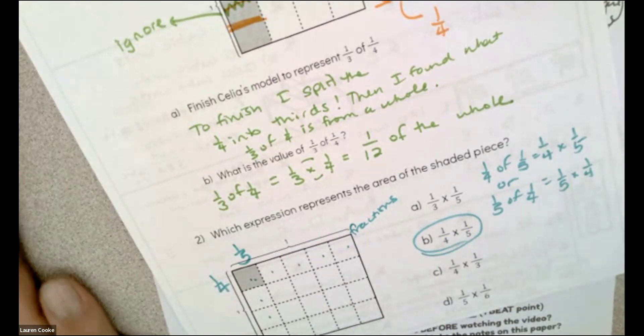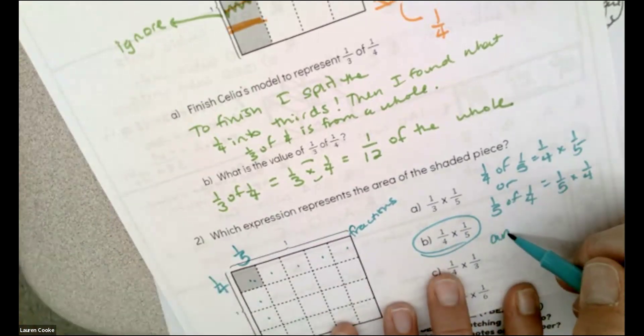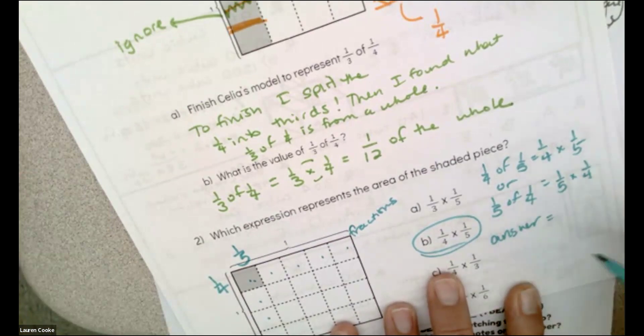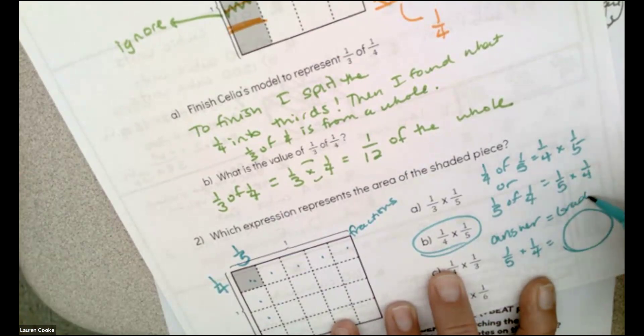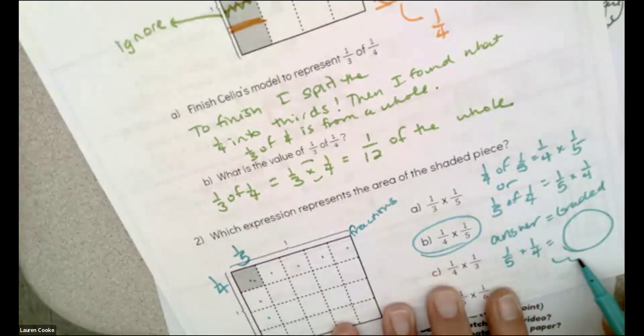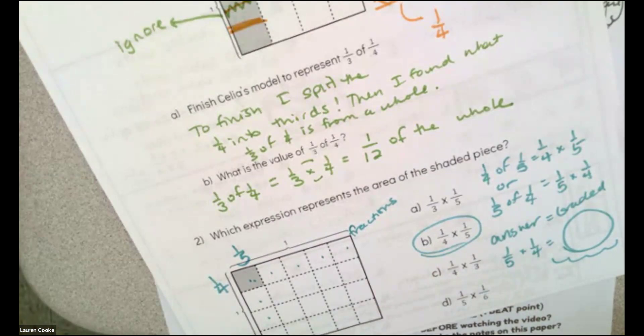So my only answer here is one-fourth times one-fifth. And as a bonus, can you find one-fifth times one-fourth to be graded? I look forward to seeing your answers.